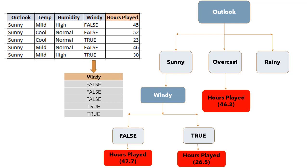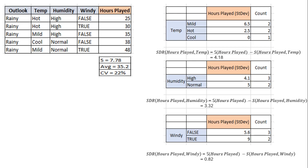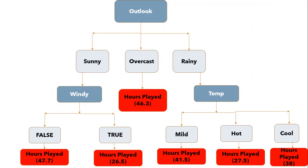Let's find the subset split for the rainy node. For node rainy, we have the dataset shown on the screen. We calculate standard deviation for values of each column, then find the standard deviation reduction — temp has the highest standard deviation reduction. We can go to node temp for further splitting, but the number of data points for all three branches — mild, hot and cool — is equal to or less than 3. So we stop further branching and assign the average of each branch to the related leaf node. Now we have the complete decision tree for regression analysis. When the number of instances is more than 1 at a leaf node, we calculate the average as the final value for the target variable.